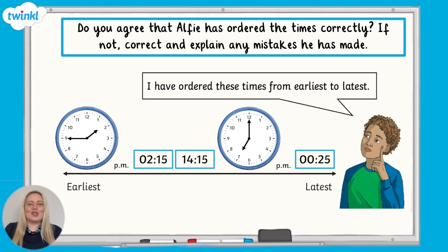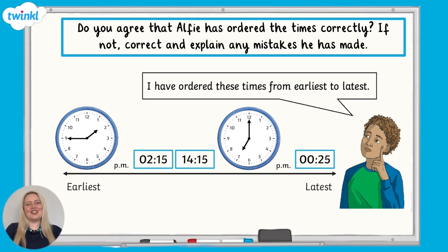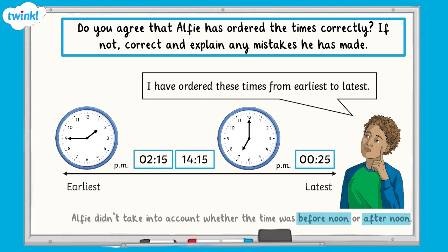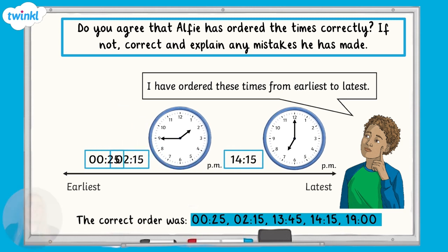Pause the video here and have a go. Well done. Here's the answer. Alfie didn't take into account whether the time was before noon or afternoon. Here is how the times should have been ordered.